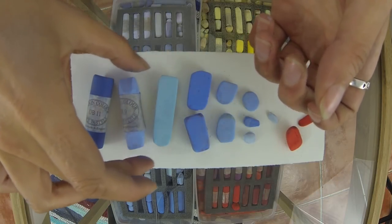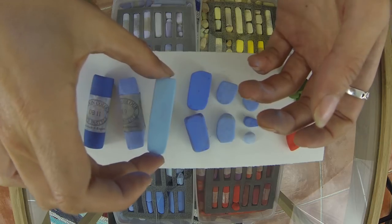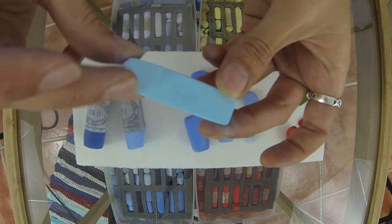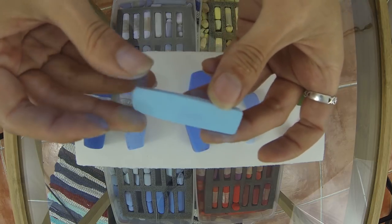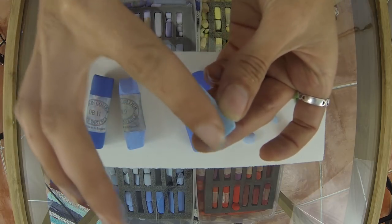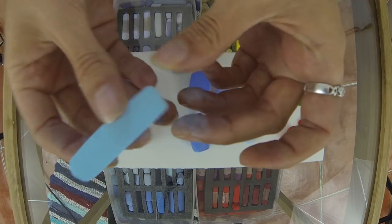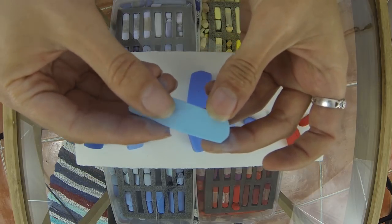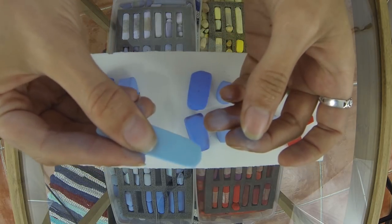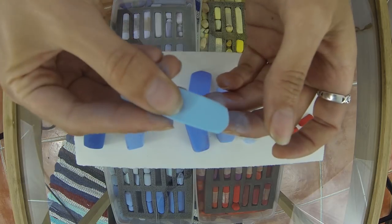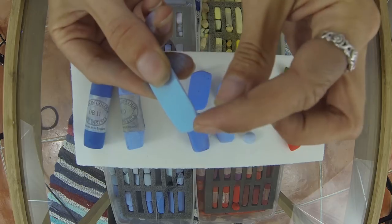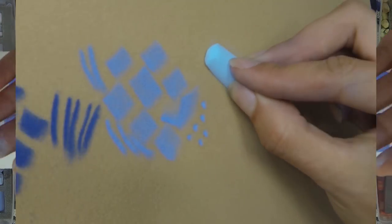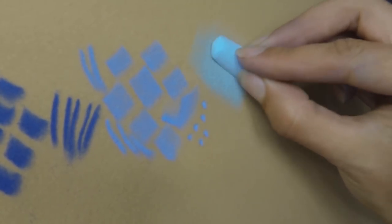But most of my pastels, as soon as I get them, they get the papers ripped off. And this one was probably used to block in some large area of sky or something, so it's created this lovely flat edge. And I love when they go like this because it makes it really nice and comfortable to hold. And you get so many sharp edges around here and the top, it's a very useful shape of pastel.